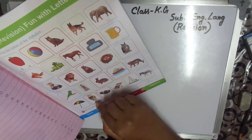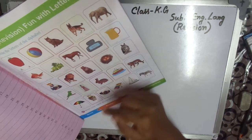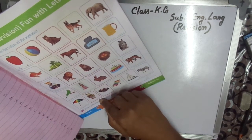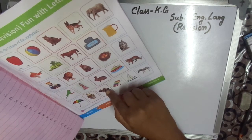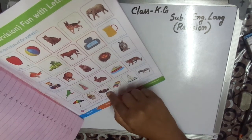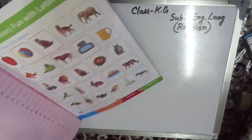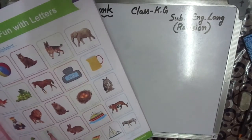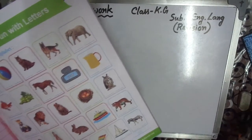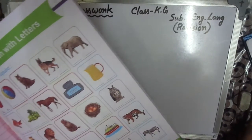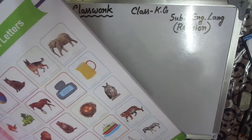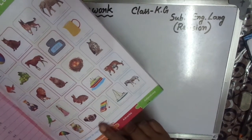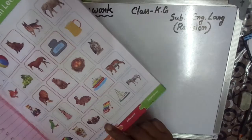V — capital V, small v. W for Vase — capital W, small w.